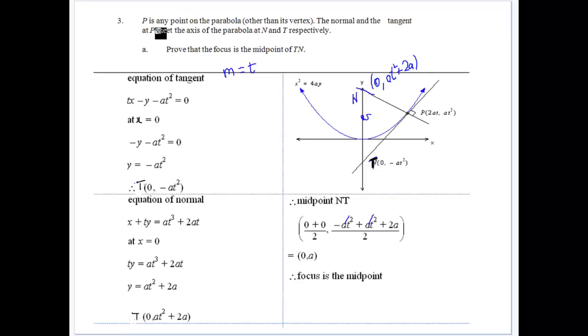So in question three, we've got P is a point on the parabola, any point except for the vertex. And the normal and the tangent at the axis of the parabola at N and T respectively. So that's what we've got. We draw it up. We've got our tangent and the normal. And basically we're looking at the two points there. N where the normal touches, T where the tangent touches, which is the y axis.